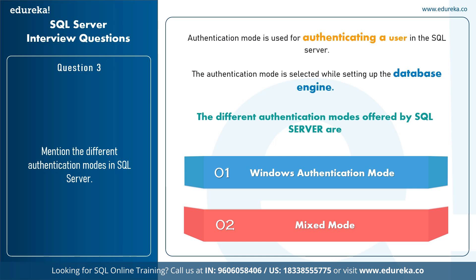Mixed Mode is used to connect with an instance of SQL Server using either SQL Server authentication or Windows authentication. In this mode, there is a username and password set by the user for the database, and when you want to log in to SQL Server, you have to provide those credentials. These are the two authentication modes: Windows Mode and Mixed Mode.